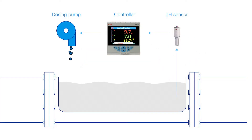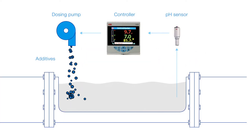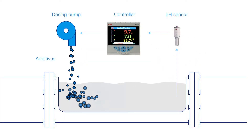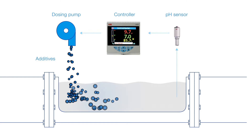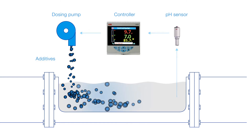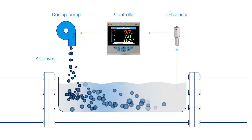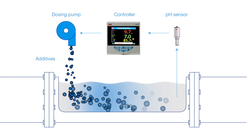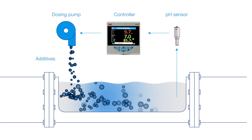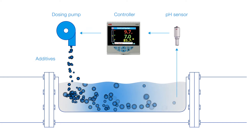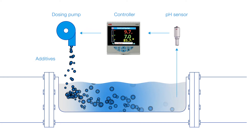Either acidic or alkaline additives are introduced to adjust the pH level in processes. However, the additive must mix with the medium and a chemical reaction take place, so results are rarely instantaneous.